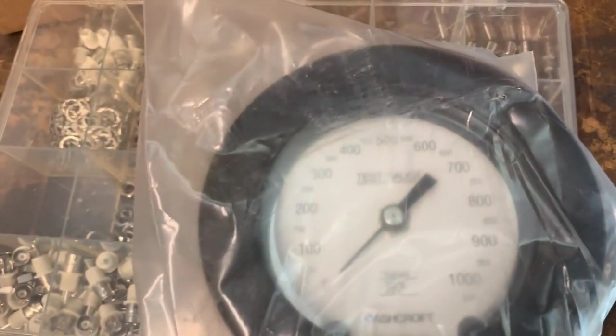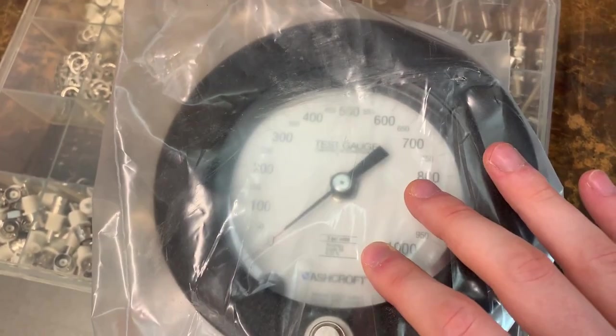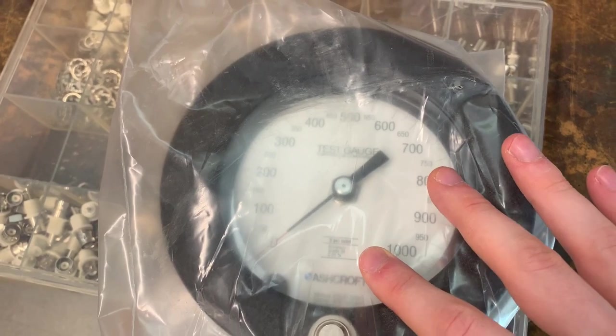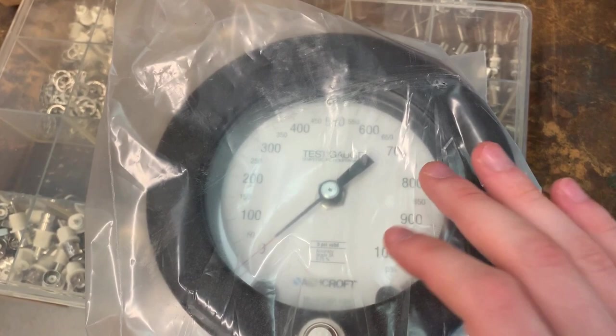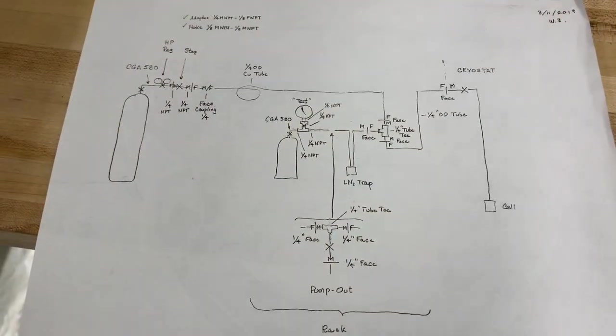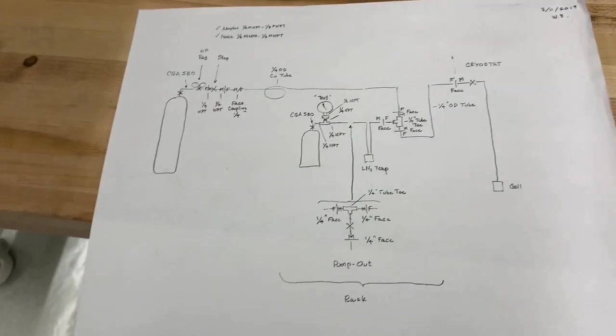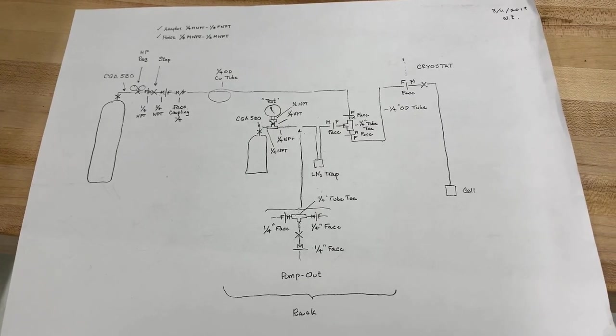In the high pressure apparatus that we're going to use for solidifying helium, we need to be able to measure high pressures pretty accurately, so we've got this brand new high pressure gauge that we're going to be using for that. So this is the diagram for the pressure system for our high pressure solid helium experiments that we're looking to do.